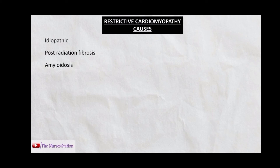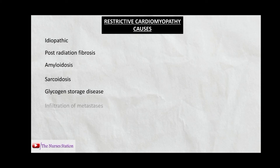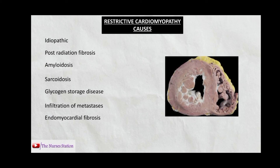Additional causes of restrictive cardiomyopathy include: amyloidosis (deposition of abnormal protein in the myocardium), sarcoidosis (a multisystem granulomatous disease causing tiny granulomas in the myocardium leading to rigidness), glycogen storage disease (insufficient enzymes to break down glycogen, which builds up in the myocardium), infiltration of the myocardium by metastasis, endomyocardial fibrosis, and Loeffler's endocarditis.